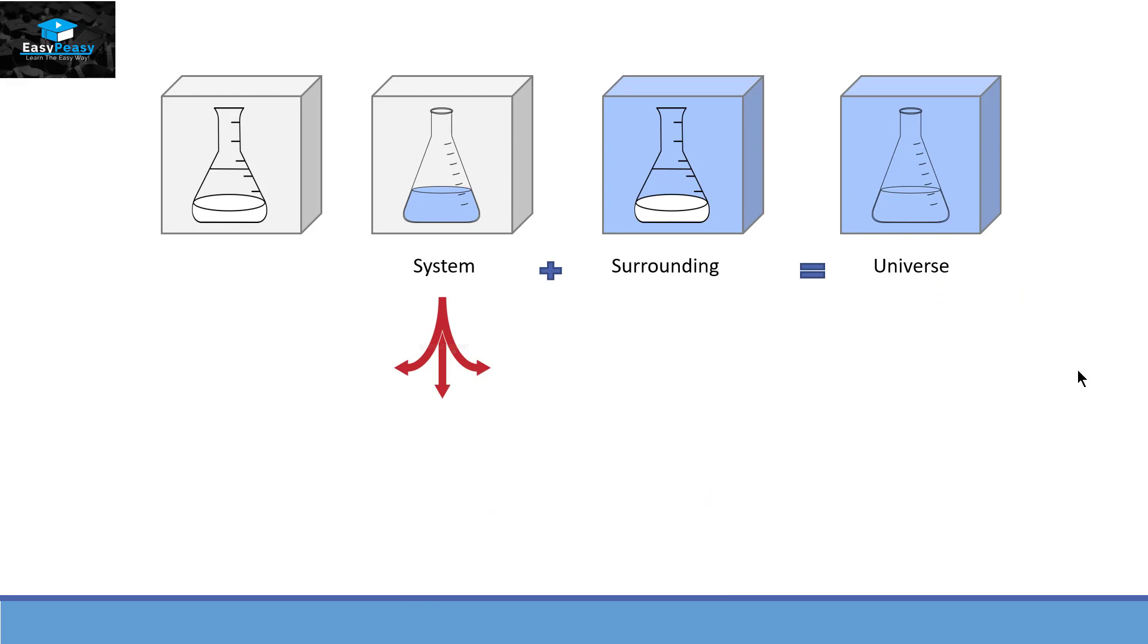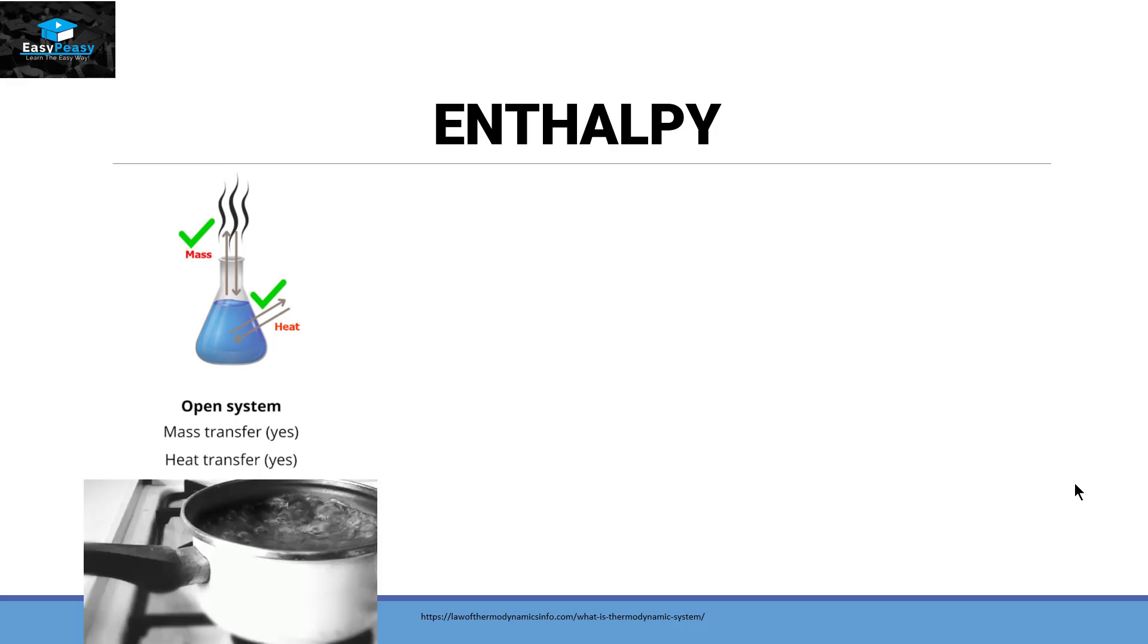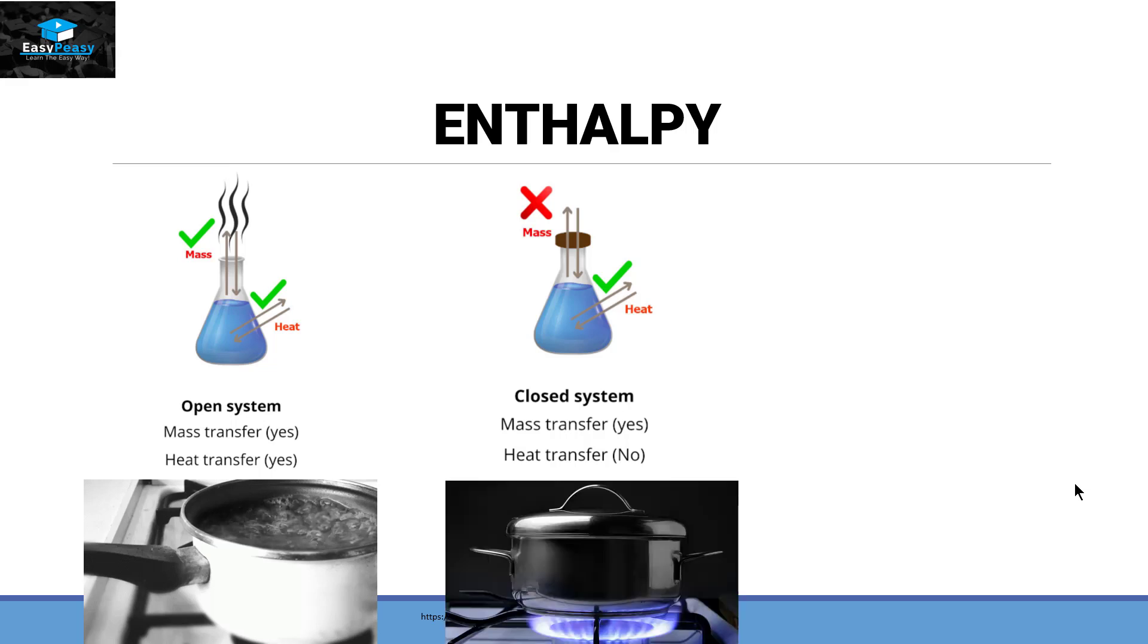Now systems can be of three different types. One is called an open system, one is called a closed system, and the third one is an isolated system. In an open system, both mass and heat can transfer from system to its surrounding. For example, a boiling pot of water. In this case, the water is evaporating so the mass is transferring, plus the heat is releasing from the pot. The other system is the closed one. So if we put a lid on the top of this pot, then the mass will not transfer outside into the surrounding, but the heat can still transfer from the system to its surrounding. So this type of system is called a closed system.